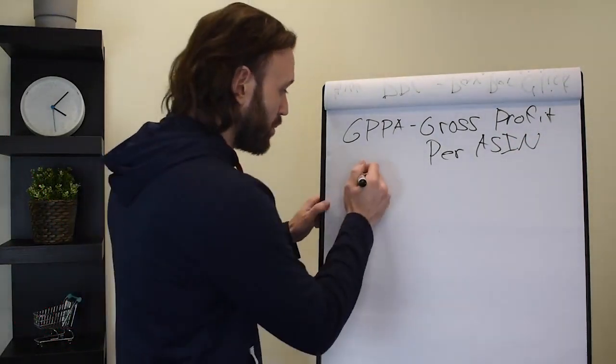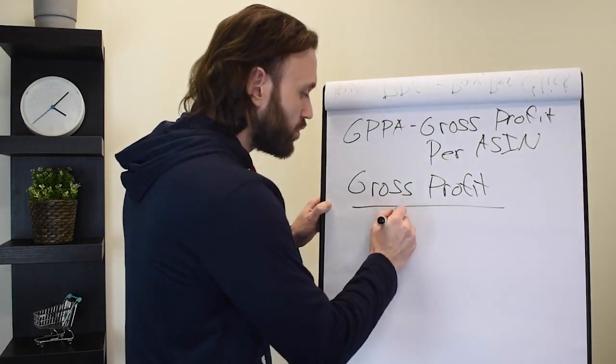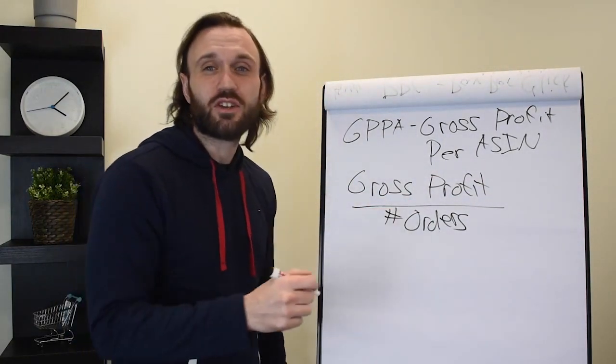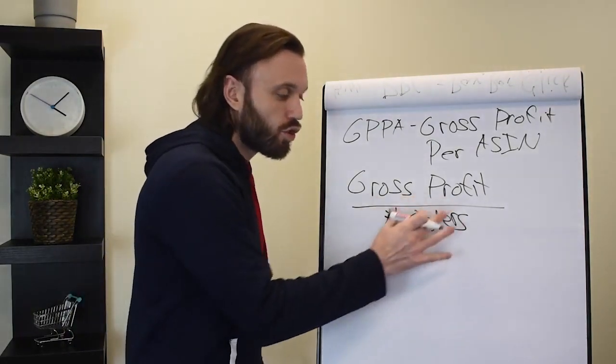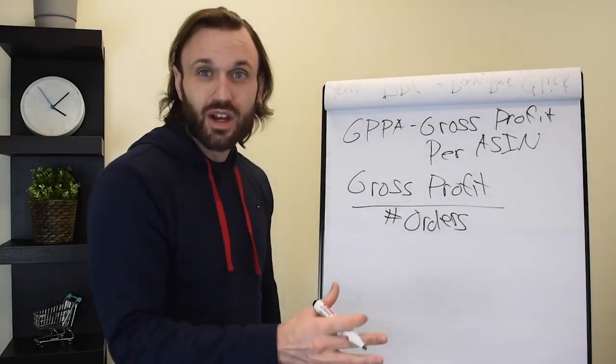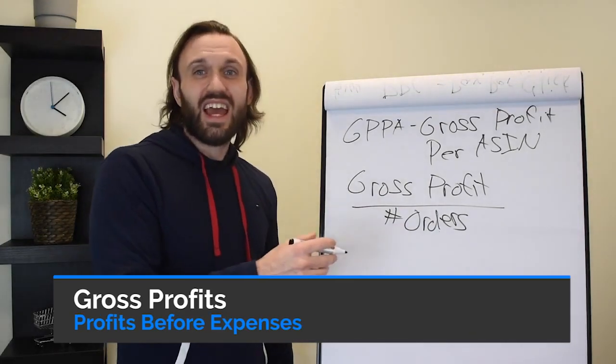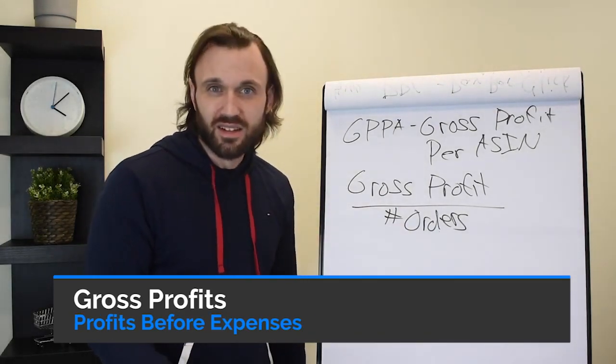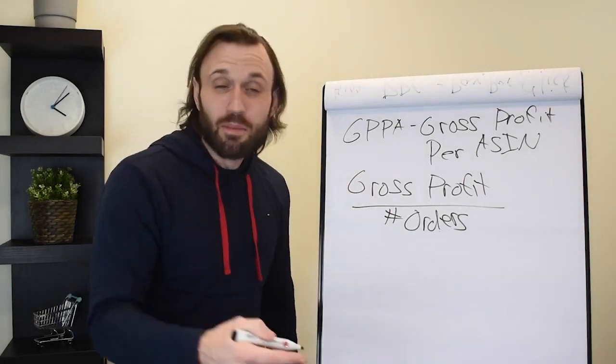You take your gross profits and divide them by the number of orders you sold. The best way to do these metrics is on a 30-day basis. From today, you can analyze your gross profits and your orders for the past 30 days and get a number. It's going to really give you insight into your company.